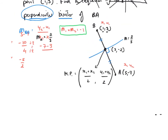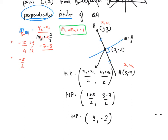Applying the midpoint formula: the average of the x-coordinates is 1 plus 5 over 2, and the average of the y-coordinates is 3 plus minus 7 over 2, which is 3 minus 7 over 2. So 1 plus 5 is 6; 6 over 2 is 3. And 3 minus 7 is minus 4; minus 4 over 2 is minus 2. So the midpoint is (3, -2). That's the point that lies on the perpendicular bisector.